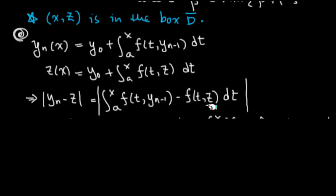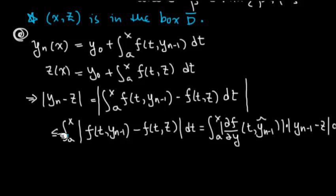This is the situation we apply mean value theorem on the y part. Via this inequality, we make this one bigger by taking the absolute value inside the integral, and we replace this quantity with the mean value: the partial derivative multiplied by difference of input, yn minus 1 minus z.